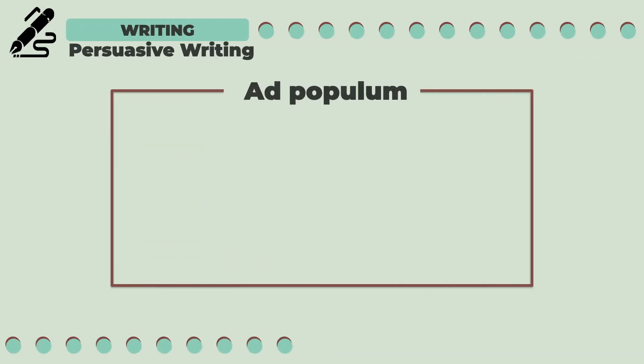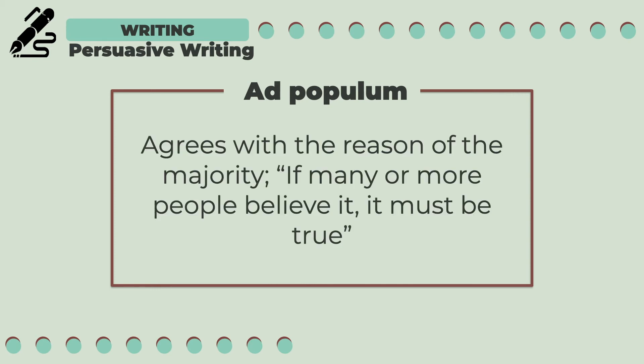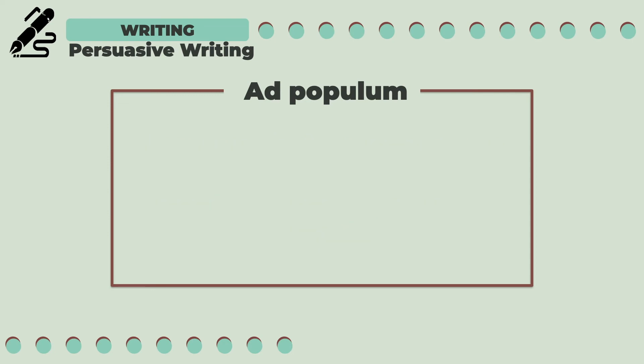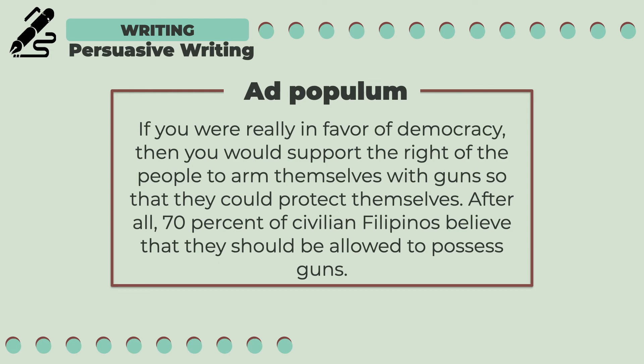Moving on to the fourth type of logical fallacy: ad populum. This is agreeing with the reason of the majority — it focuses on the idea that if many people believe in it, it must be true. For example: "If you were really in favor of democracy, then you would support the right of the people to arm themselves with guns so that they could protect themselves. After all, 70% of civilian Filipinos believe that they should be allowed to possess guns." In this example, the author used a percentage of civilian Filipinos as supporting evidence to the argument.